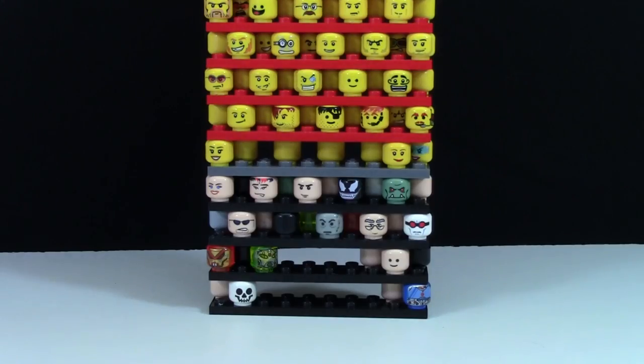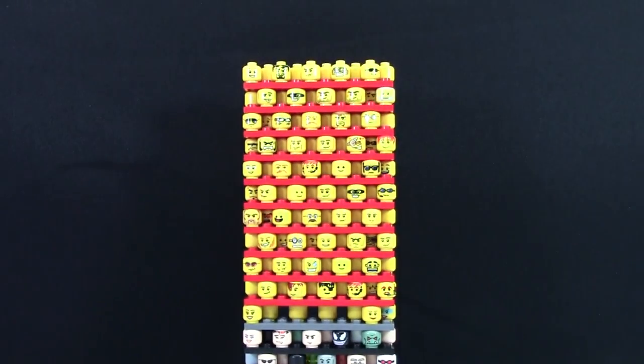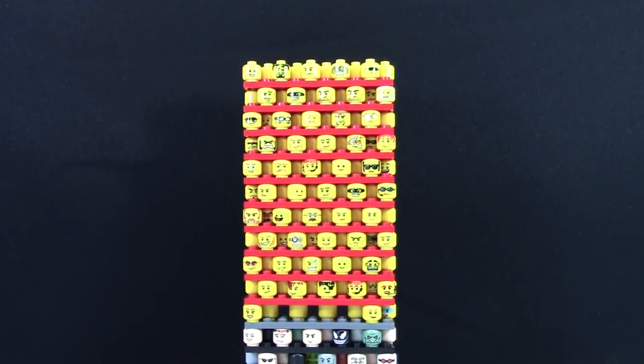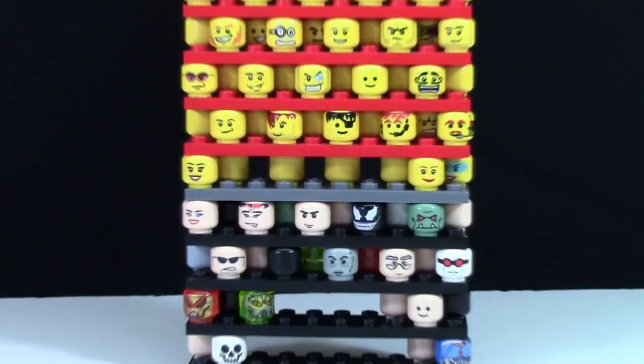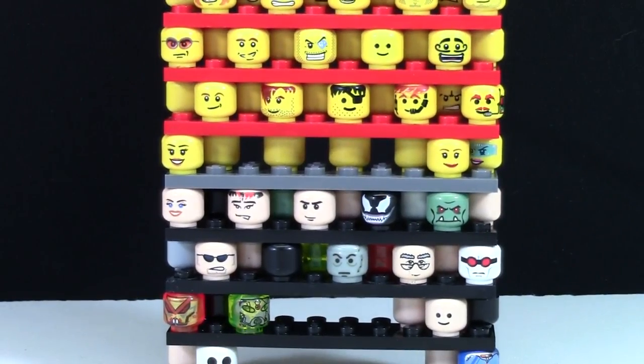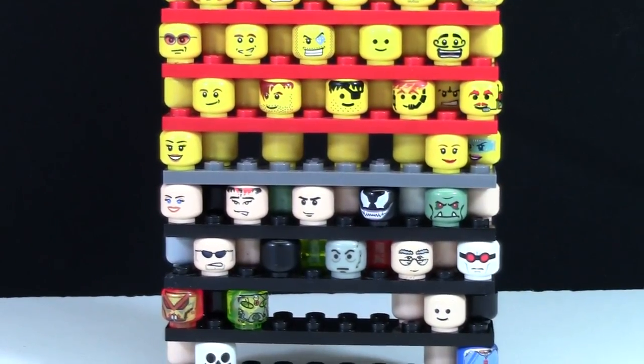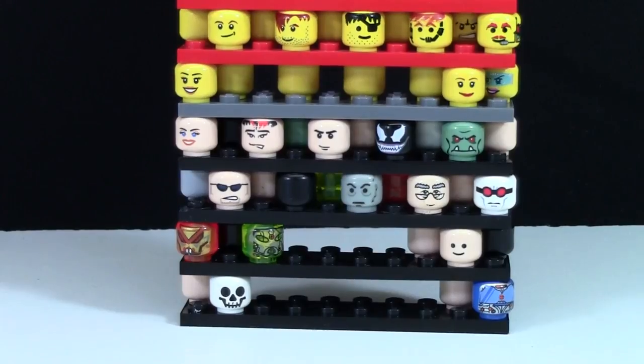Something I did to be a little easier when I'm searching for heads is color code them. So basically, the red plates are all male yellow heads, the dark bluish plates are the women's heads, and the black plates are the weird colored heads, like flesh or black or green or all these different colors.